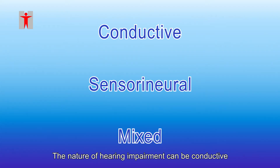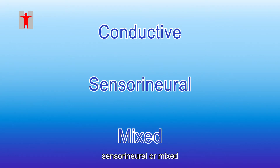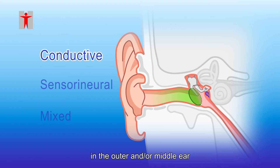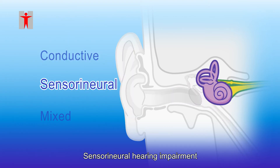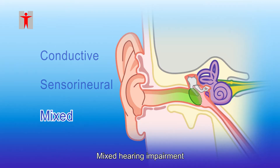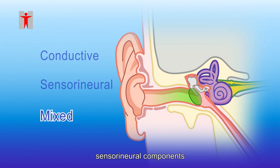The nature of hearing impairment can be conductive, sensorineural, or mixed. Conductive hearing impairment is caused by problems in the conduction of sounds in the outer and/or middle ear. Sensorineural hearing impairment involves impairment found in the inner ear and/or auditory nerves. Mixed hearing impairment includes both conductive and sensorineural components.